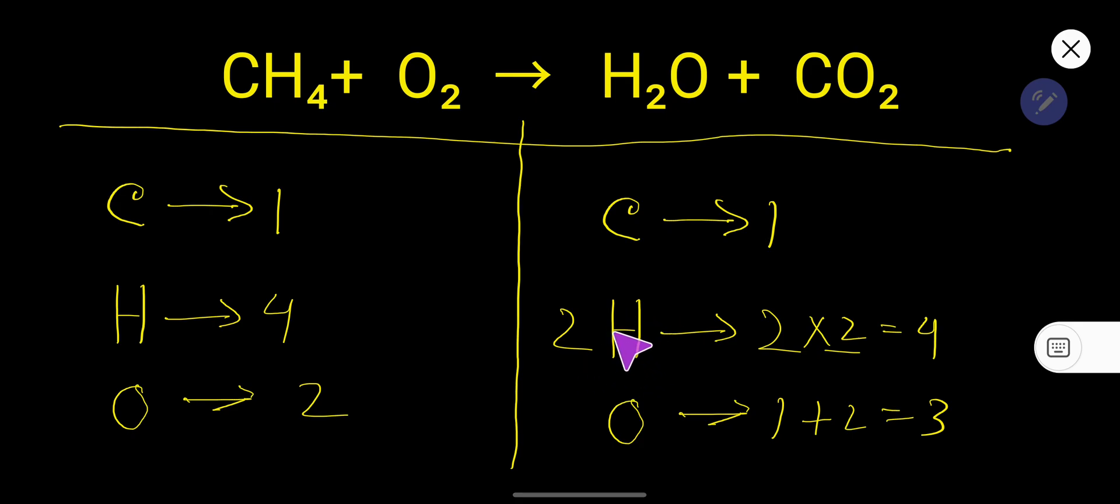This hydrogen has come from here, so place here 2. So 2 times—this is coefficient, this is subscript. You have to multiply coefficient times subscript, so 4 hydrogen. Then 2 oxygen here, 2, 2 oxygen.